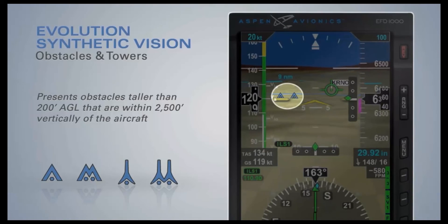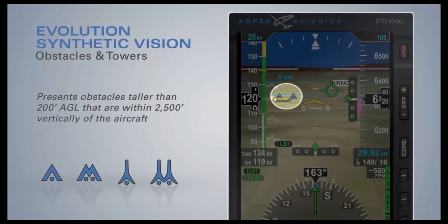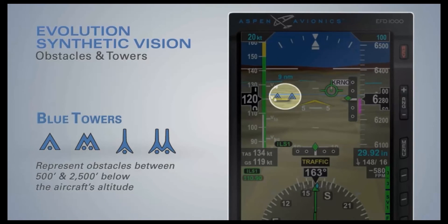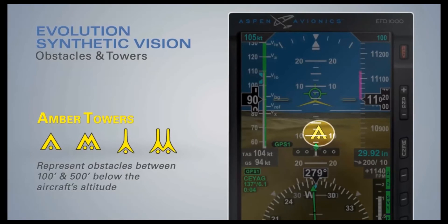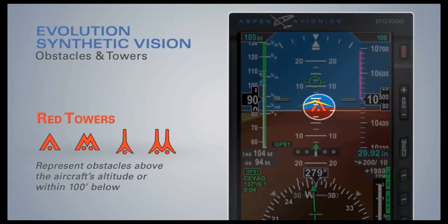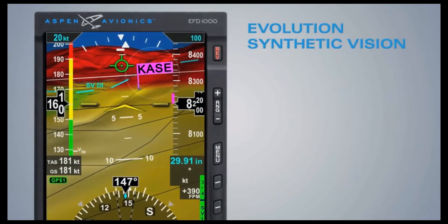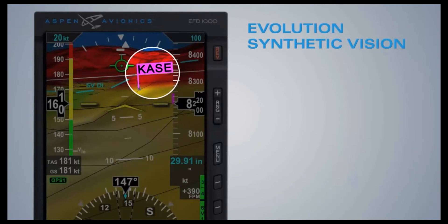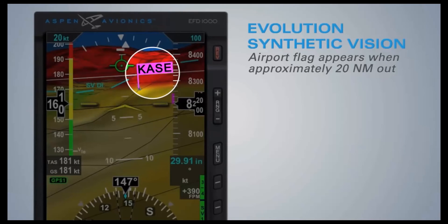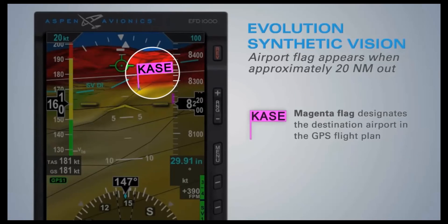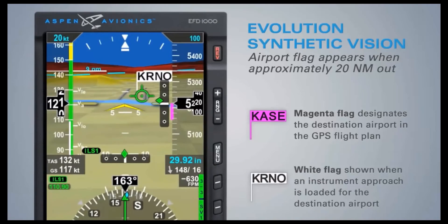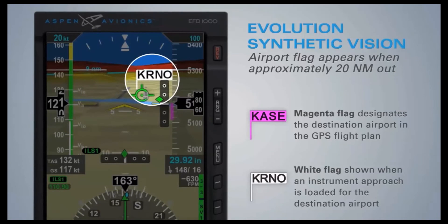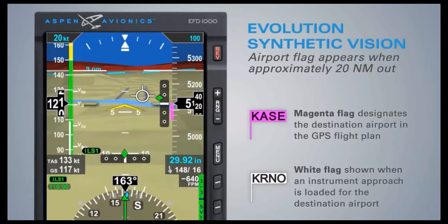The obstacles presented in the synthetic vision view appear small at first and grow larger as they get closer to the aircraft. Blue towers represent obstacles that are between 500 feet and 2,500 feet below the aircraft's altitude. Amber towers represent obstacles between 100 feet and 500 feet below the aircraft's altitude. Red towers represent obstacles that are above the aircraft's altitude or within 100 feet below. An airport flag displays the airport's identifier and its virtual location, presented when the aircraft is approximately 20 nautical miles away. The destination airport loaded into the aircraft's GPS flight plan is identified with a magenta flag. Once an approach is loaded, the magenta flag turns white. At 2 nautical miles, the flag is removed from view to reduce display clutter.